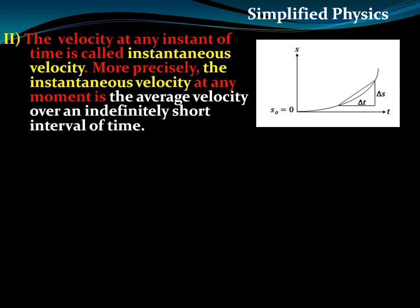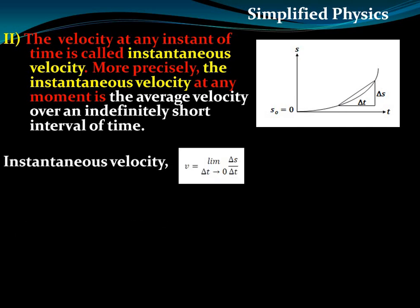Instantaneous velocity is the velocity at a particular instant of time. In terms of the displacement-time graph, the instantaneous velocity at any moment is the average velocity over an indefinitely short interval of time. We consider two points very close together — over that very short time interval — and find the average velocity, which we call the instantaneous velocity.